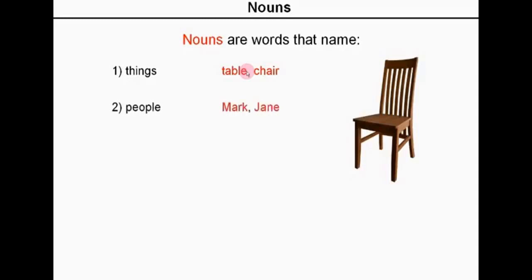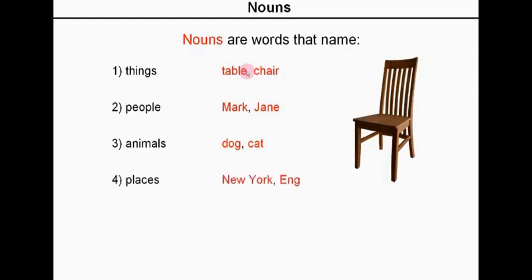Nouns can name people, so Mark or Jane or perhaps even driver or pilot. Animals, for example, dog and cat. And of course, places — New York, England.